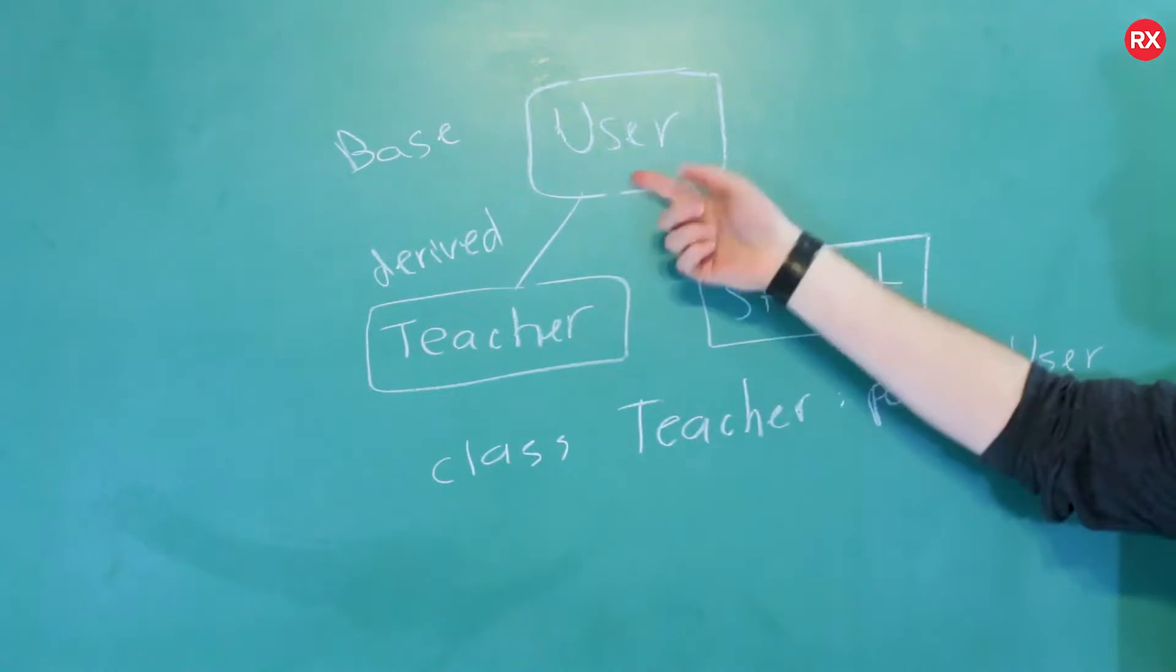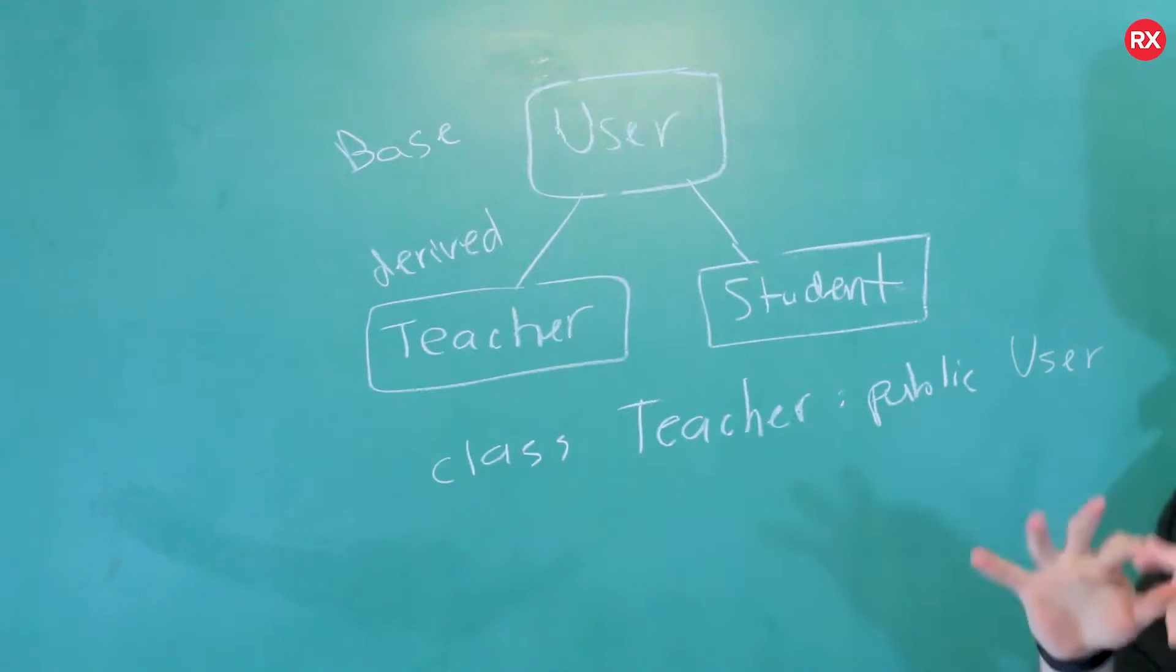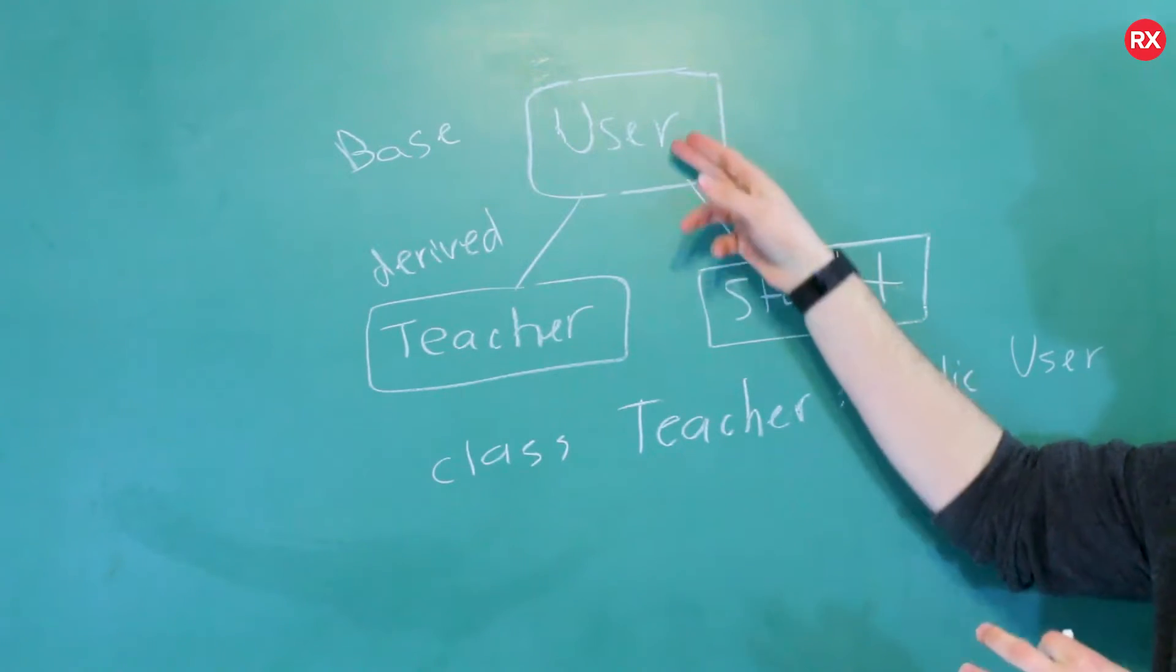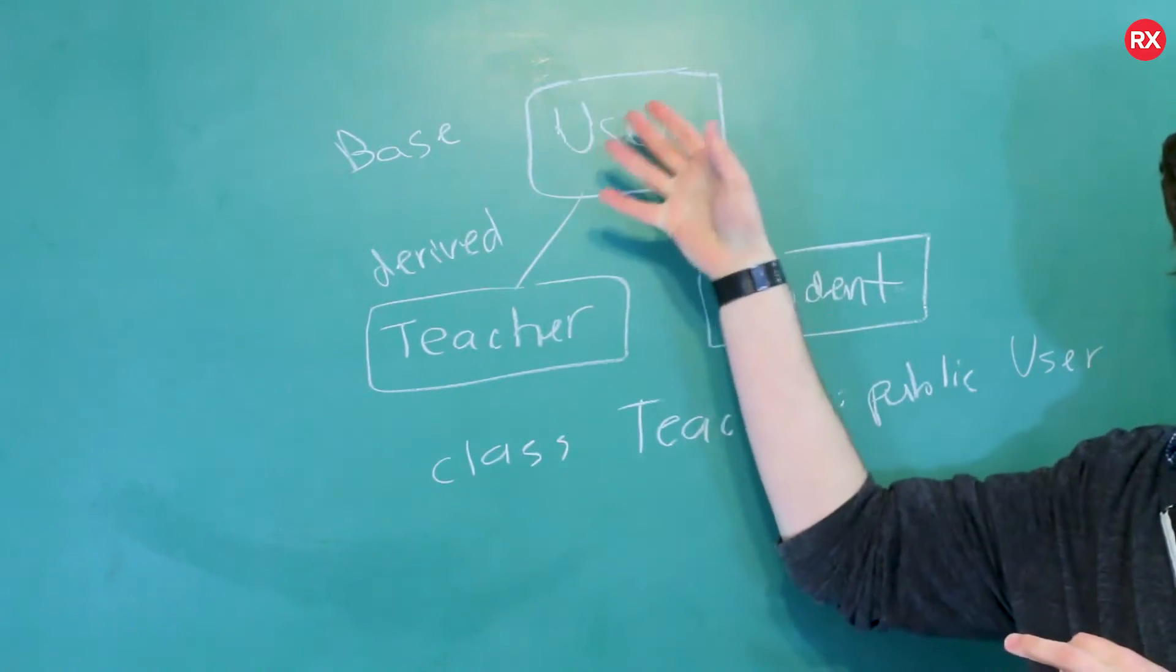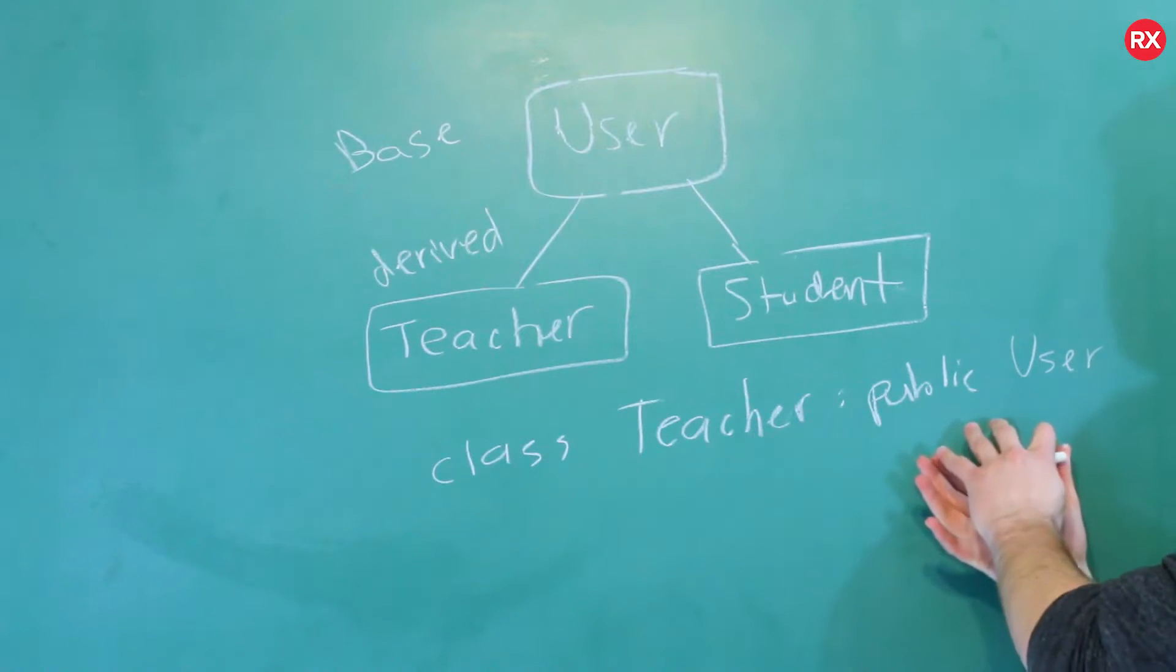So that is how you establish that connection. You're going to inherit the stuff from user. Now the public there, you don't really need to worry about that, but you can put different access modifiers there if you want to basically change the way the members are inherited, change the access of the members. I'm going to keep them all at default. So to do that, we're going to put public.